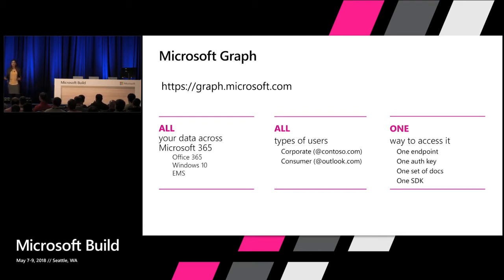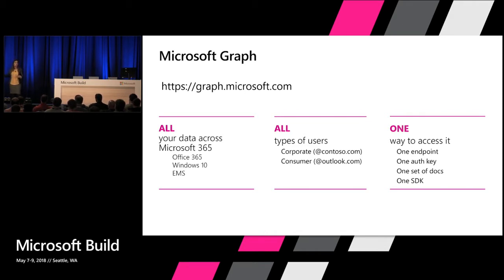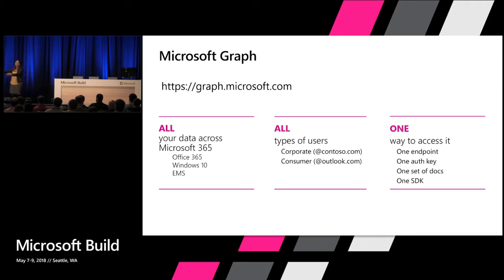One set of documents, one SDK. If you've been a developer working with our products for a long time, you might remember how before, you had to learn how to interact with each individual service — Azure Active Directory, SharePoint, Windows services, Intune — all differently. Now you access through a REST endpoint the data behind the graph across all these different services. The key value prop is that you learn how to interact with the service once, and that investment automatically translates to all the different services.